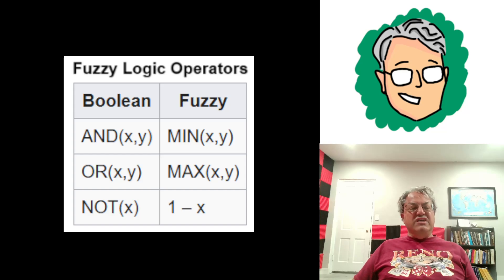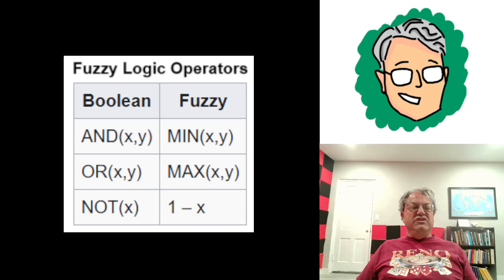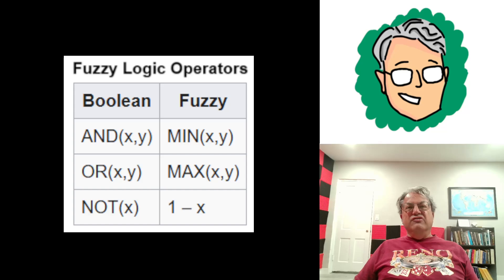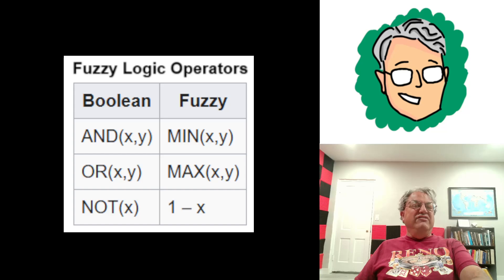And if you wanted 'or,' you take the maximum — so that would be 0.9. For 'not': is it cold in Vegas? That would be 1 minus the truth value of it being hot. Since the truth value of being hot is 0.9, the truth value of being cold is 0.1 — it's not cold in Vegas. It has a low truth value, not zero, because some people might think it's hot or cold; it's subjective. These things aren't set in stone — they're not black and white. That's why they're called fuzzy.